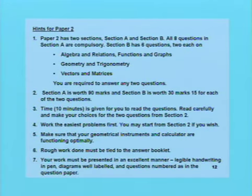Hints for paper 2. Paper 2 has two sections, Section A and Section B. All eight questions in Section A are compulsory. Section B has six questions: two each on algebra, relations, functions and graphs; geometry and trigonometry, two questions; vectors and matrices, two questions. You are required to answer any two questions. You can select one from algebra and one from geometry, no problem. Section A is worth 90 marks, and Section B is worth 30 marks, 15 for each of the two questions.